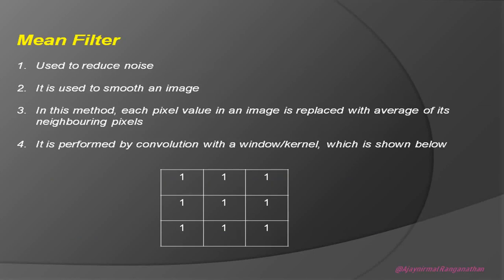A mean filter is used to reduce noise and smooth an image. In this method, each pixel value in an image is replaced with the average of its neighboring pixels. It is performed by convolution with a window or kernel, also called the sliding window. Next we will see what a median filter is.